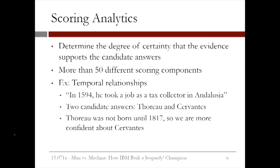The scoring analytics determine the degree of certainty that the evidence supports the candidate answers. More than 50 different scoring components are used. One example is analyzing temporal relationships. Consider the Jeopardy question: 'In 1594, he took a job as a tax collector in Andalusia.' Two candidate answers are Thoreau and Cervantes. However, this algorithm would determine that Thoreau was not born until 1817, so it would give a higher score to Cervantes.